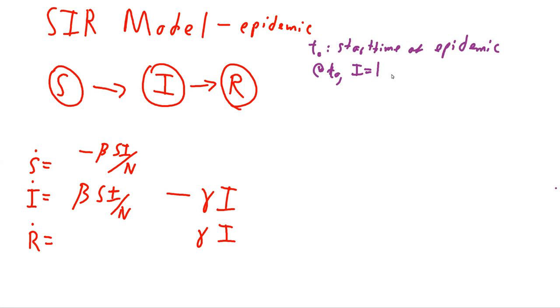And so if I is one at time T-naught, then that means that S, the number of people in S is approximately N. It's not quite N, it's technically N minus one. But if N is large, S is approximately N. So we're going to approximate S as N and we're going to see what happens when we take a look at this equation at the initial times.